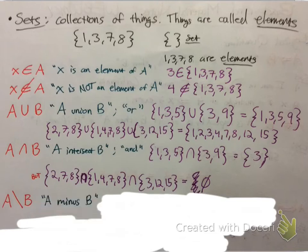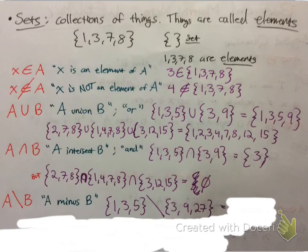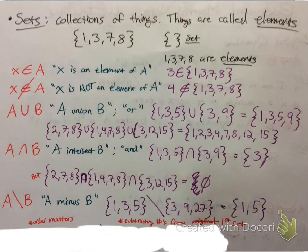This last one — A slash B — means A minus B. It kind of looks like dividing, but it's not. It means: if you subtract the numbers of the second set from the first set, what would you end up with? Order matters here. Since there's a 3 in common, the 3 is removed. So you'd only be left with 1 and 5. Even though you have 3 and 27 in the second set, you still only keep 1 and 5, because you're subtracting from nothing.